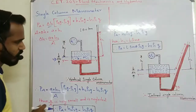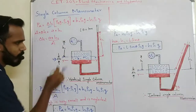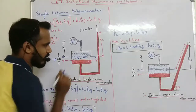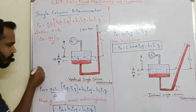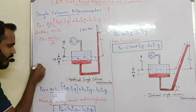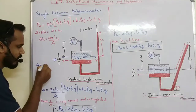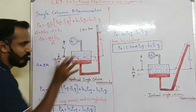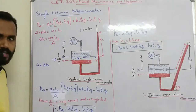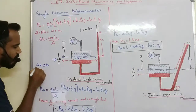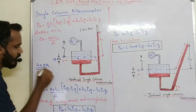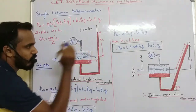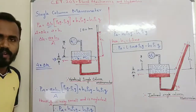Let me start by calculating the volume. The volume of this particular section is area into height, which involves delta h. The volume equals area into delta h.